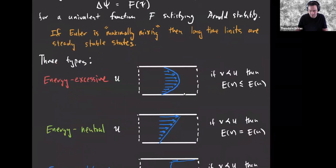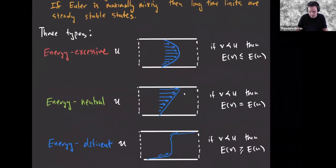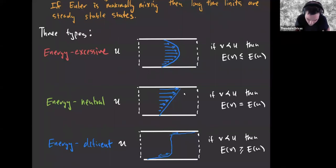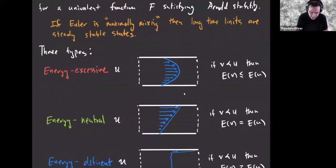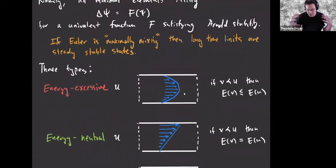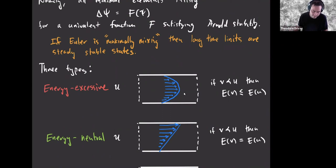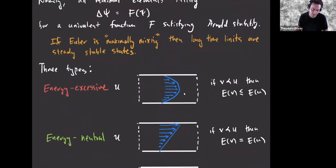He divides minimal elements into types: energy-excessive (any mixing would lessen the energy), energy-neutral, and energy-deficient (you can only lose energy under mixing). What this is saying is that if Euler is really maximally mixing — not minimizing enstrophy or a different Casimir, but just being a minimal element — then the prediction is the long-time limits are stable, in fact Arnold stable, stationary states of Euler.